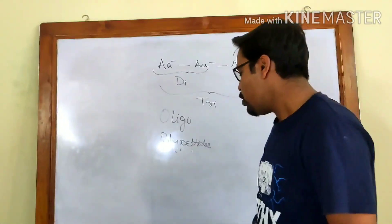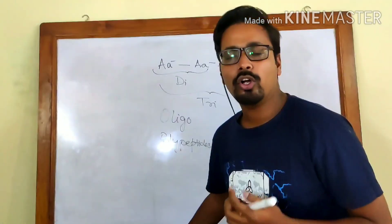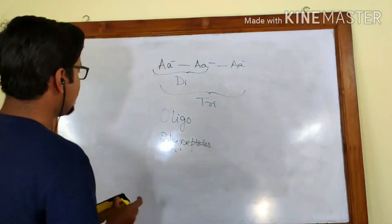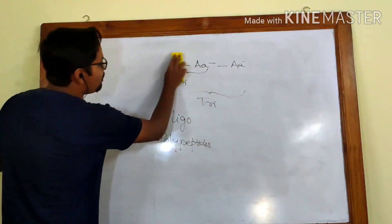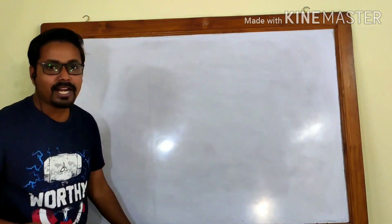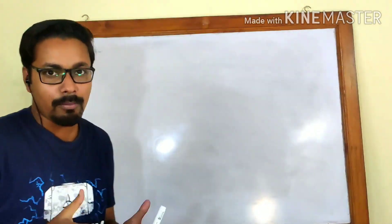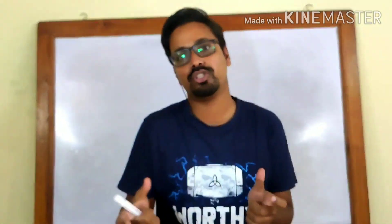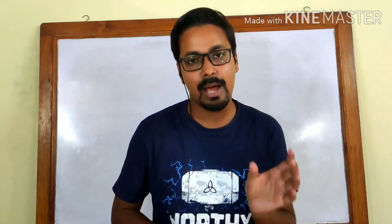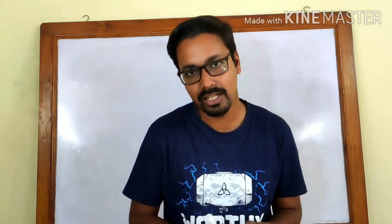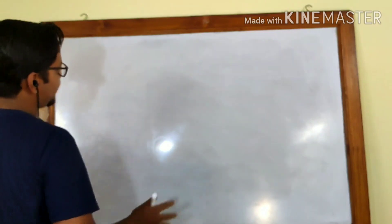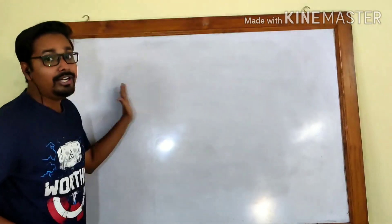Now we will move on to see how the peptide bond is actually formed. Peptide bonds are formed between the amino group and the carboxyl group — specifically, the amino group of one amino acid and the carboxyl group of the other. Let's look at a rough diagram of how it looks when peptide bonds are formed.